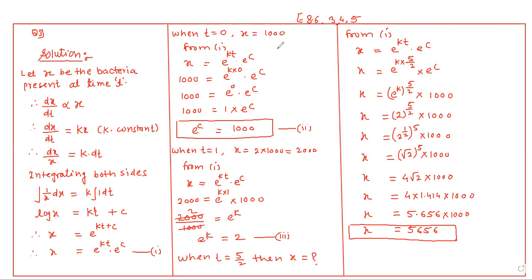The rate of growth of bacteria is proportional to the number of bacteria present. Let x be the bacteria present at time t. The rate of growth dx/dt at time t is proportional to the number of bacteria present at that time. So dx upon dt is equal to kx, where k is the constant.